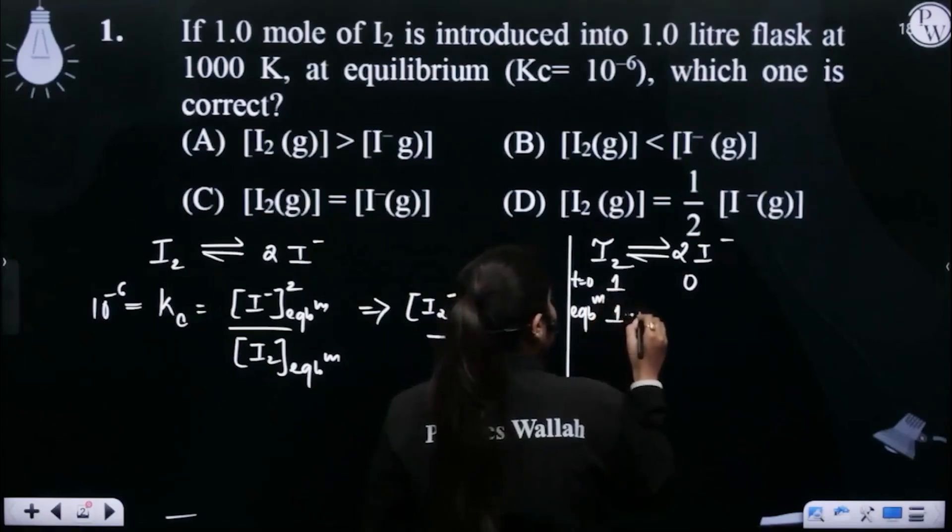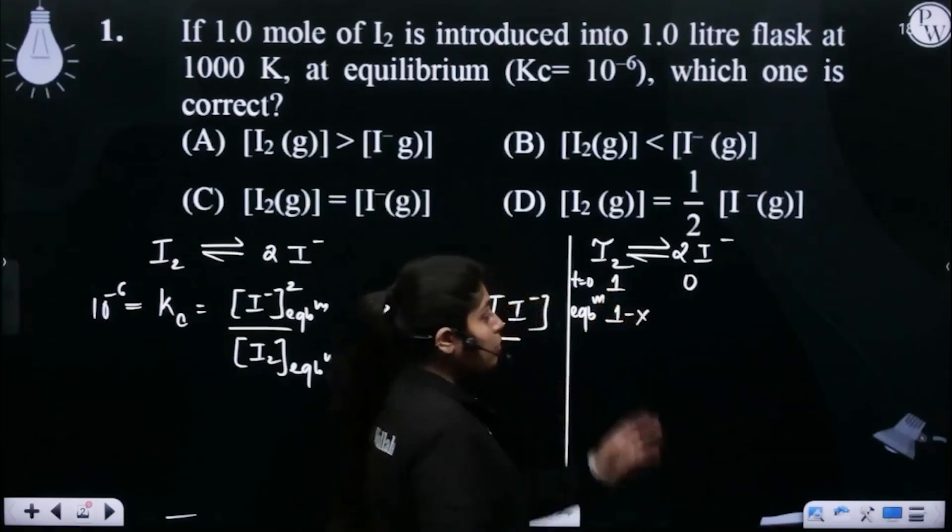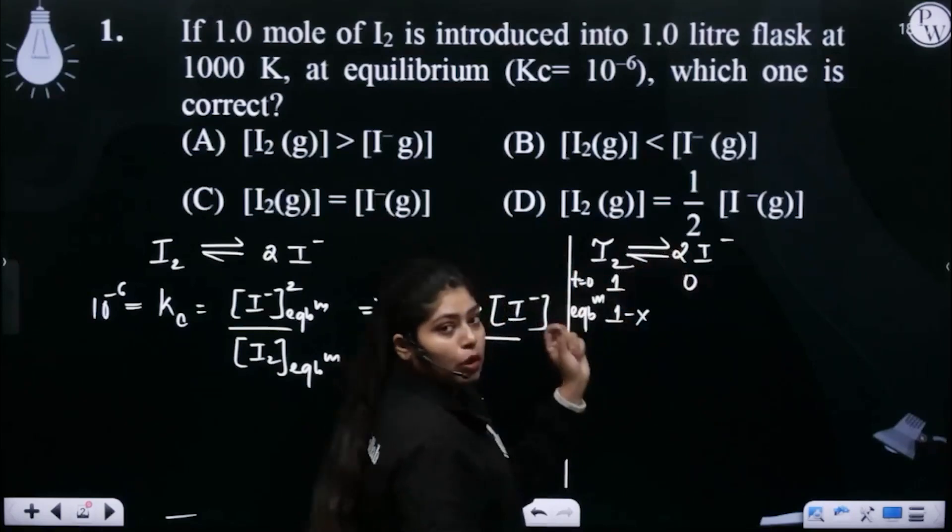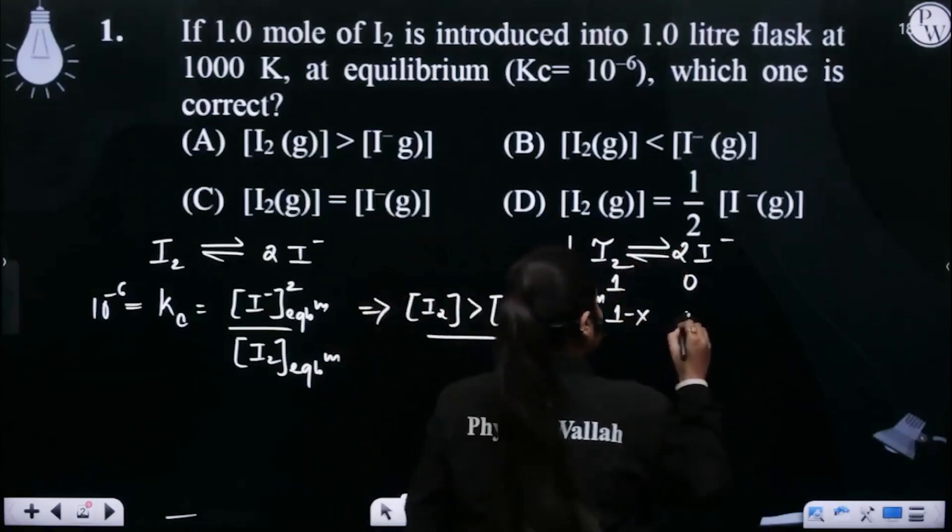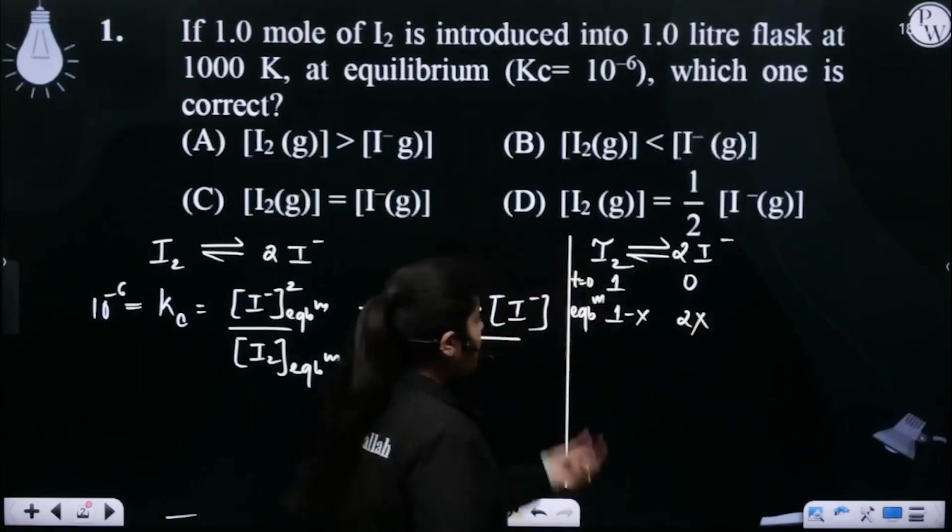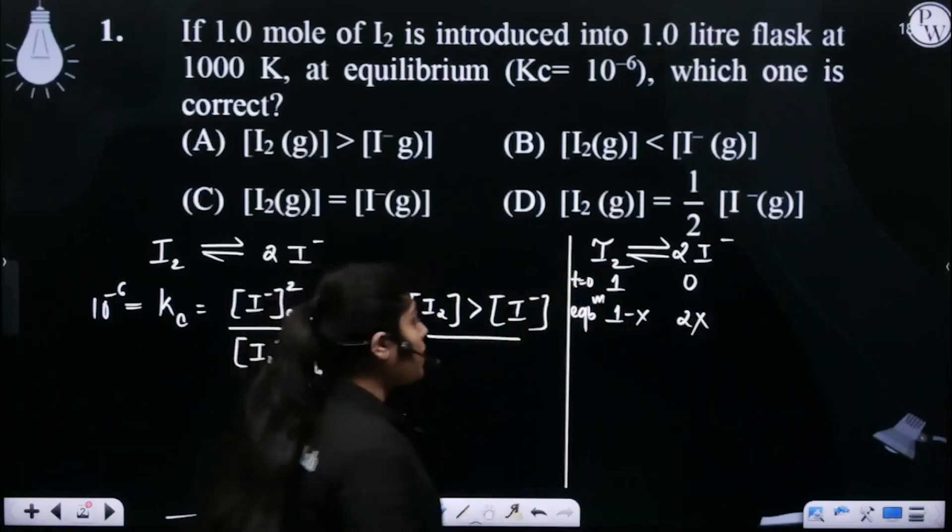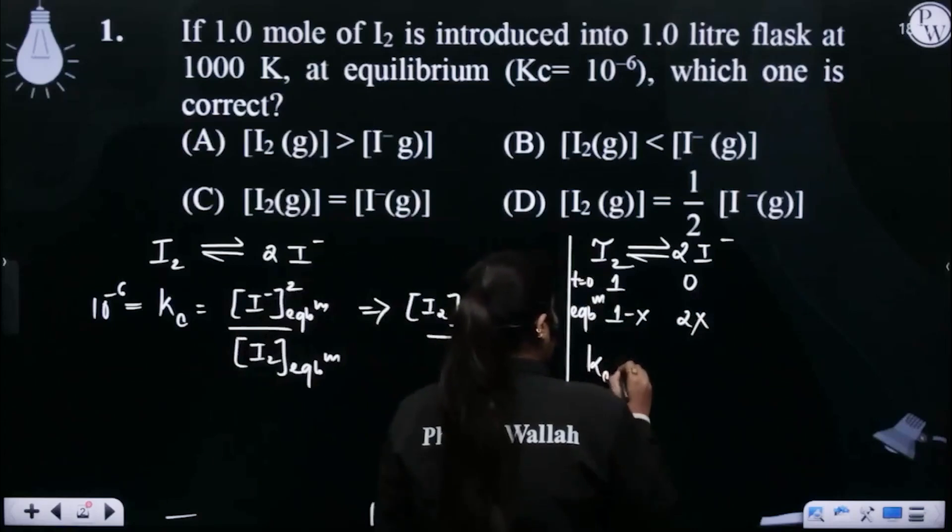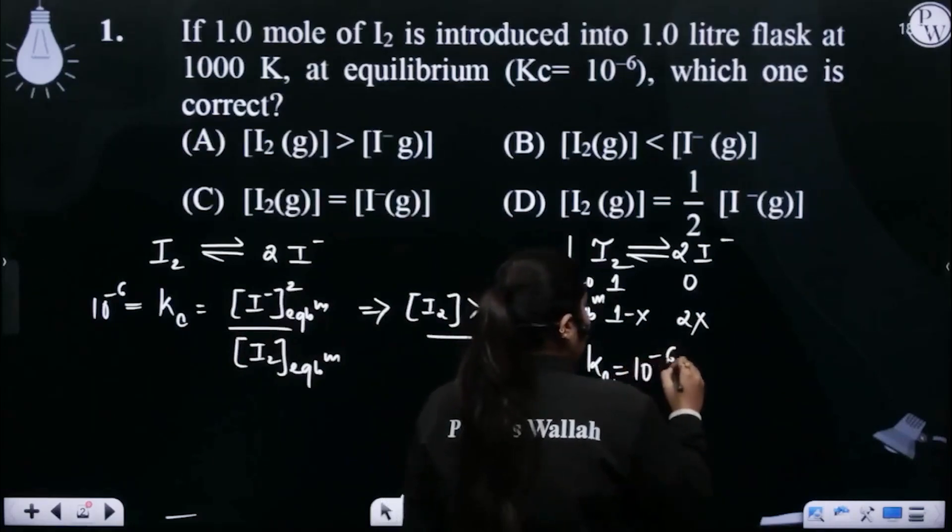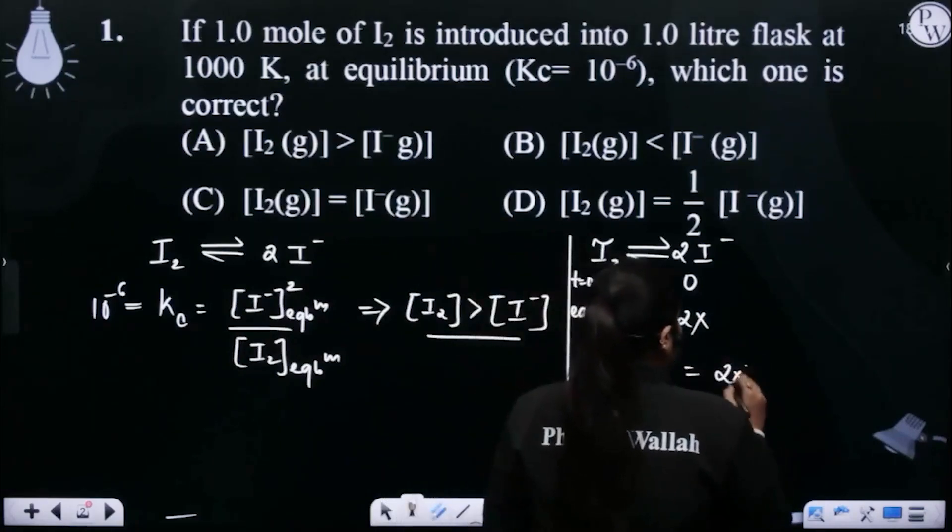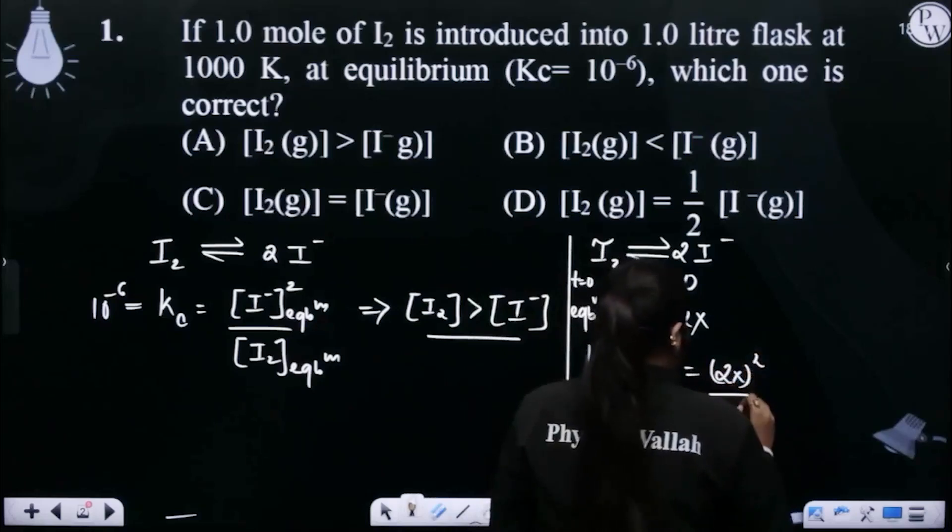So what will happen here? 1 mole I2 becomes 2 moles I minus. So x becomes 2x. So this concentration is 1 minus x and 2x. This is at equilibrium. And in the equilibrium case, Kc is given 10 to the power minus 6. So which will be equal? 2x squared upon 1 minus x.